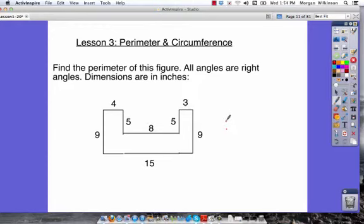Lesson 3 is on perimeter and circumference. The first thing we want to do is find the perimeter of the figure we have drawn below. All angles are right angles and dimensions are in inches.